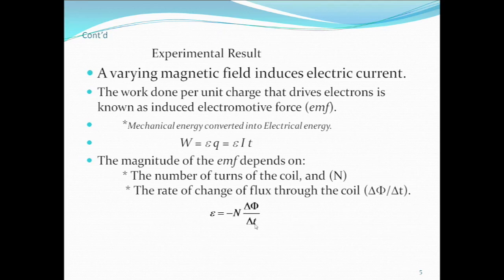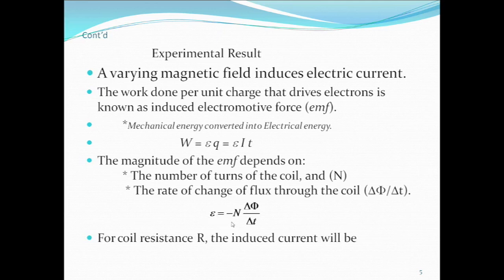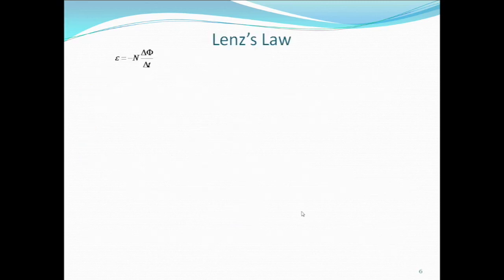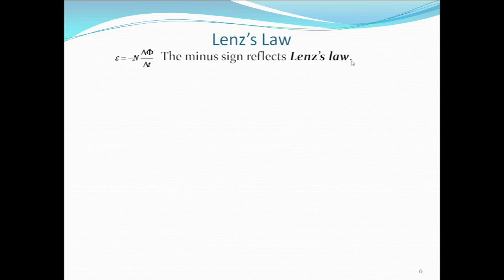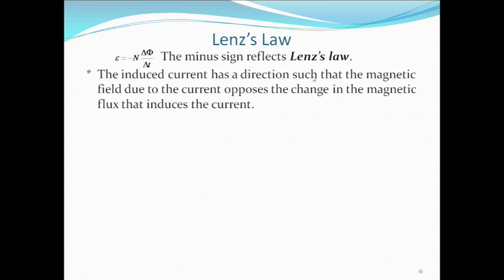The number of turns of the coil and the rate of change of flux are the important factors that decide the magnitude of the induced electromotive force. If the coil has resistance R, then the induced current is I = E/R. In this expression, E = -N·ΔΦ/Δt. The minus sign reflects Lenz's law: the induced current has a direction such that the magnetic field due to the current opposes the change in magnetic flux that induces the current.